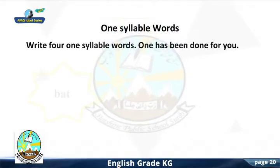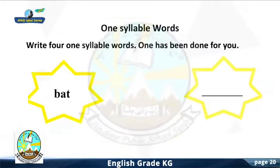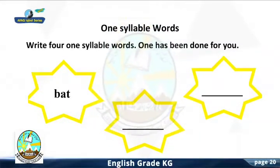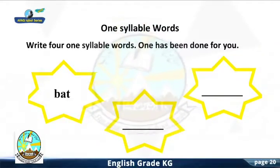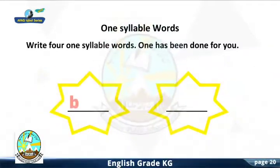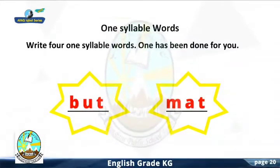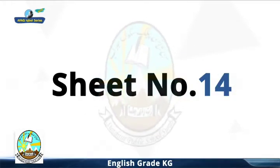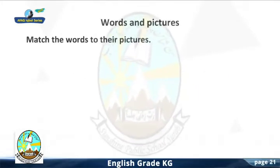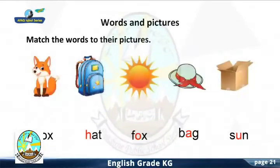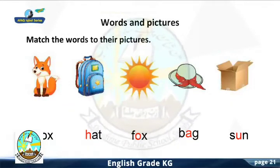C-U-T: Cut. P-E-N: Pen. Very good. Sheet Number 13 Topic: One syllable words. Write 4 one syllable words. One has been done for you. Bat, Cat, Rat, But, Mat. Very good.